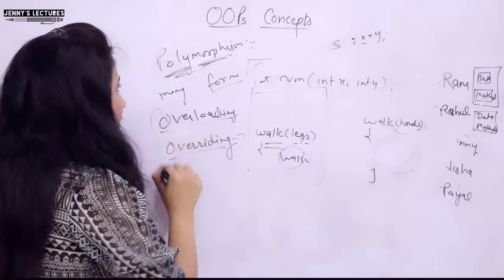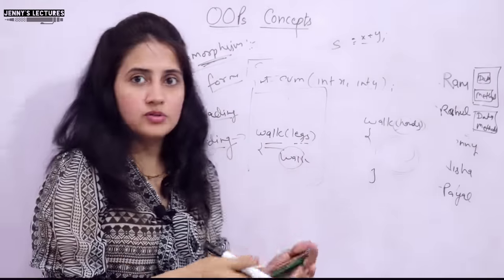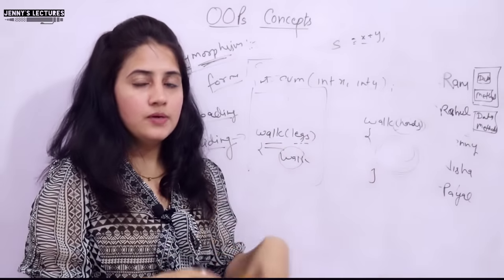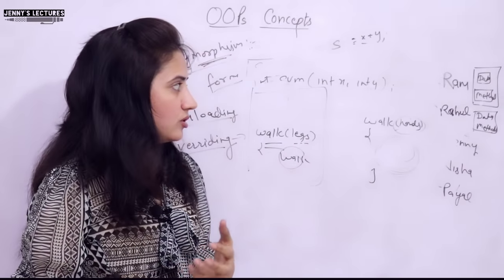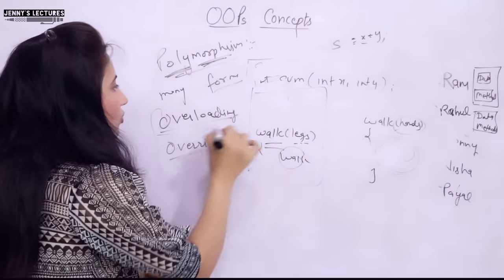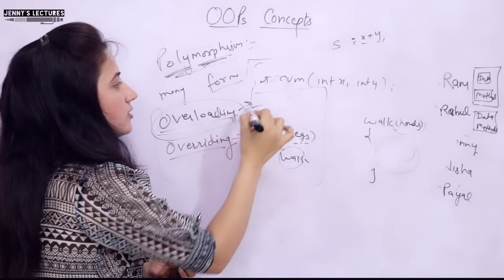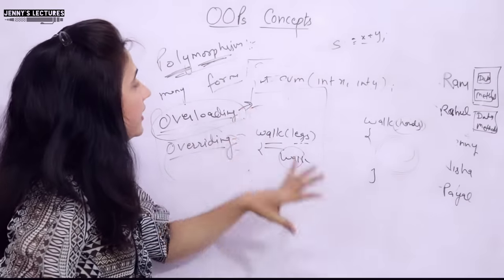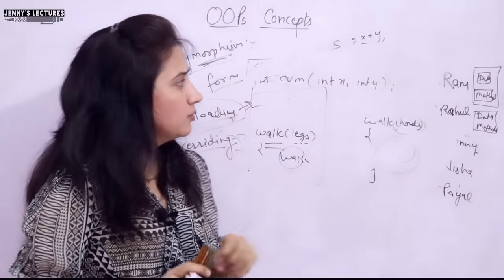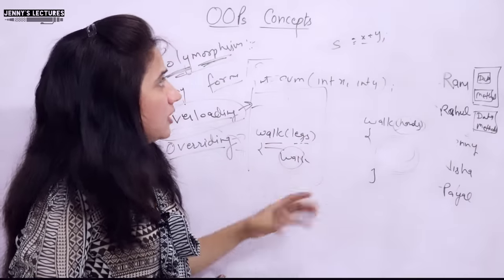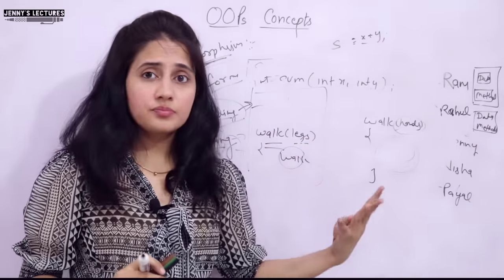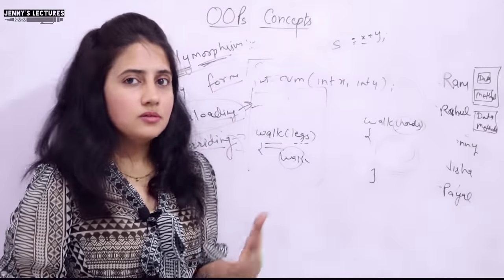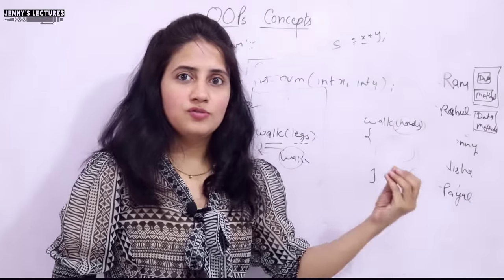Through these concepts we can achieve polymorphism. There is operator overloading, function overloading, and function overriding. If we achieve polymorphism using overloading, that is known as compile-time polymorphism. Overriding is known as runtime polymorphism. We will discuss these things in detail in later videos. I hope the basic idea about these six OOP concepts and the four pillars of object-oriented programming is clear to you.